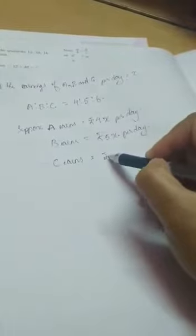It is 4. What is the earning of A? Suppose A earns, this is capital A, A earns rupees 4 into X, 4X per day. Similarly, we can write B earns rupees 5X, 5 into X, 5X per day. And your C earns equal to rupees 6X per day.